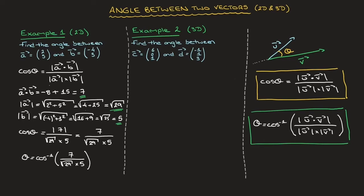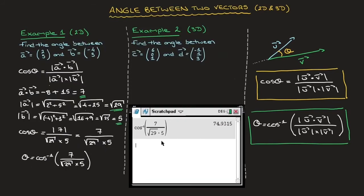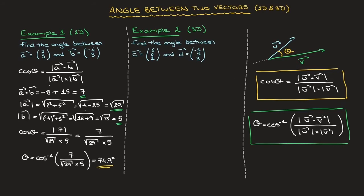By all means check, but using a calculator and rounding to one decimal place, we find that equals 74.9 degrees. The angle between vector a and b is 74.9 degrees.